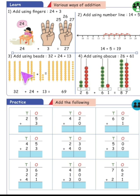To add, first count the 10 pairs: 1, 2, 3, 4, 5, 6. That's 6 pairs of 10. Then take the leftover single beads: 1, 2, 3, 4, 5, 6, 7, 8, 9. So that's 60 plus 9 equals 69. So 32 plus 24 plus 13, the answer will be 69.